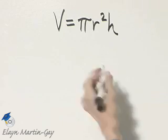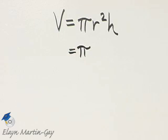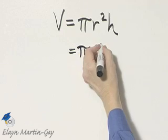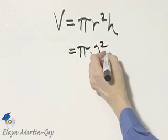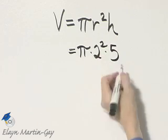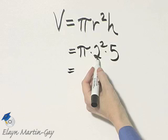So let's fill in our known values. We have pi. The radius is given to be 2 inches, so times 2 squared, and then times the height. That's given to be 5 inches. Well, 2 squared is 4.